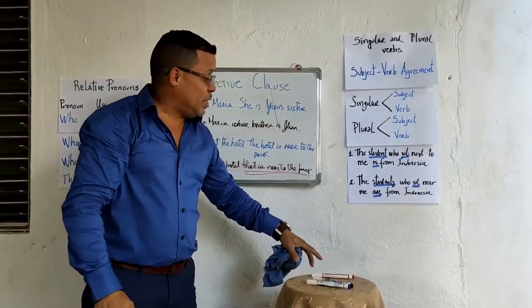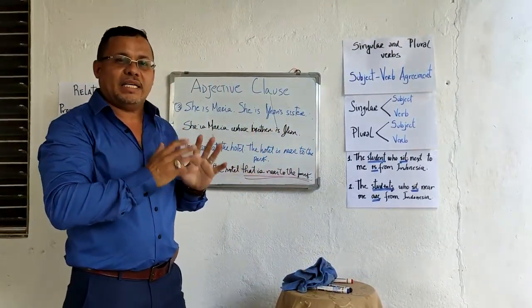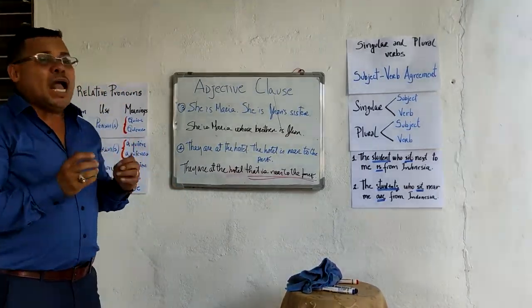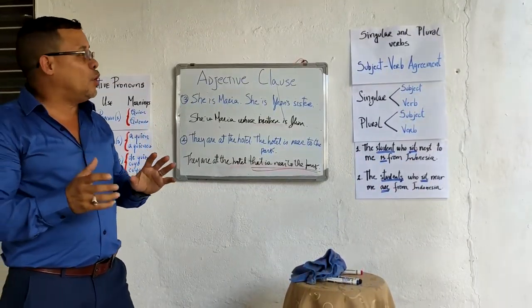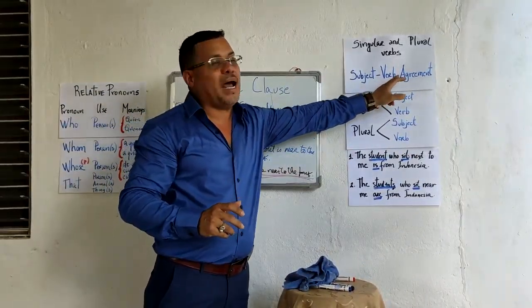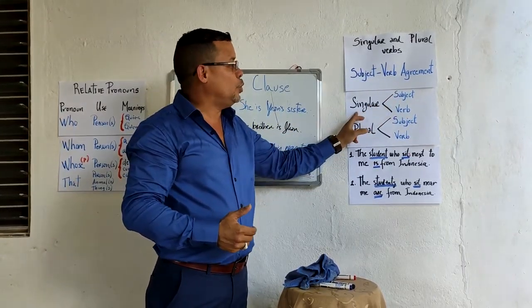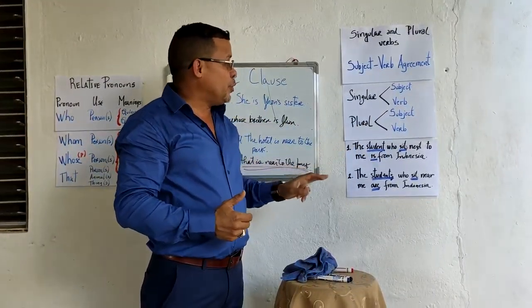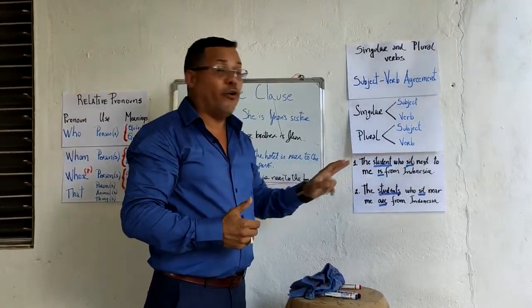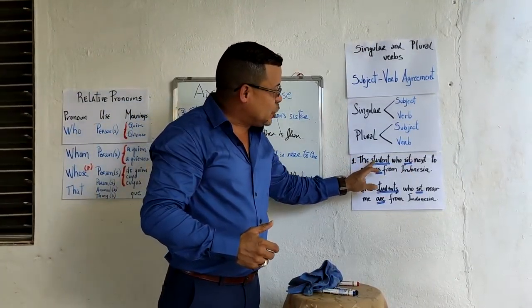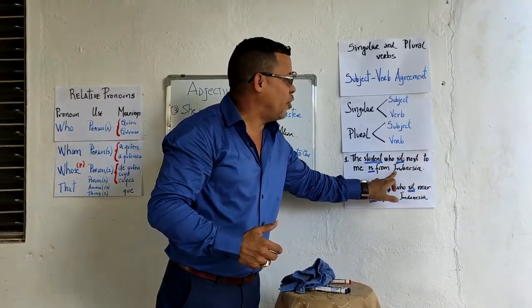Finally, let me explain a little bit about using singular and plural verbs in adjective clauses. Many people have a little problem in this case, but it is pretty easy because you need to do subject-verb agreement. When we use a singular subject, we need to use a singular verb. When we use a plural subject, we need to use a plural verb form. For example: 'The student who sits next to me is from Indonesia.'